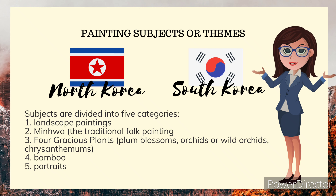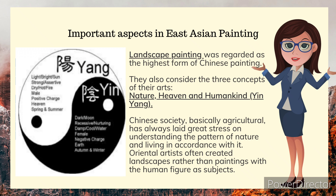Important aspects in East Asian painting: landscape painting was regarded as the highest form of Chinese painting. They also consider three concepts in their arts — nature, heaven, and humankind — as well as the concept of yin and yang. Chinese society, being basically agricultural, has always laid great stress on understanding the pattern of nature and living in accordance with it.